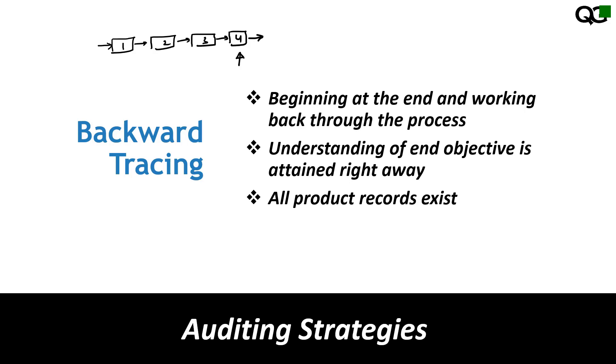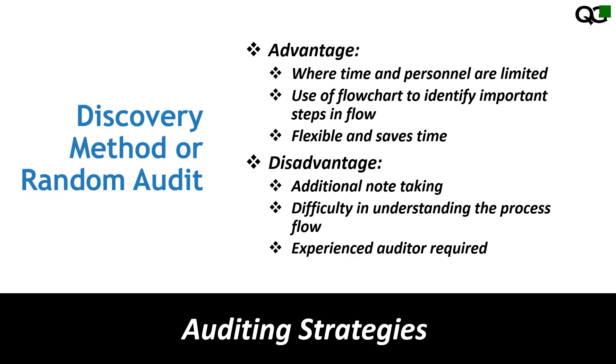The third audit strategy is the discovery method, or random audit. Here you neither begin at the start nor at the end of the process — you randomly begin somewhere in the middle. You don't go through all the processes or all the steps; instead you pick some piece in the middle and see whether the requirements at that particular point are being met or not.